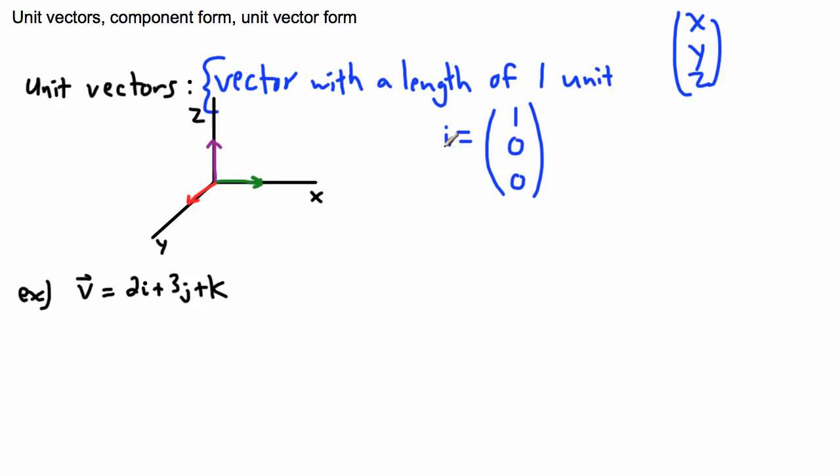Because remember, in three dimensions, vectors go x, y, z like this. So because of that, we define i as one, zero, zero. Now we have j is the next one, and that one only goes in the y direction. So because of that, it'll have none in the x direction, one in the y direction, and zero in the z direction. And finally we have k. That one is only in the z direction, so zero, zero, one.